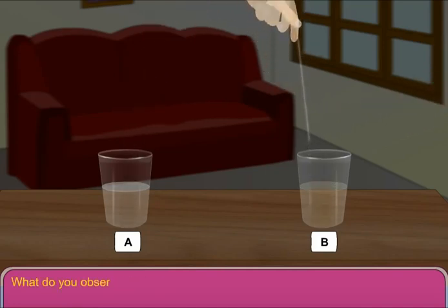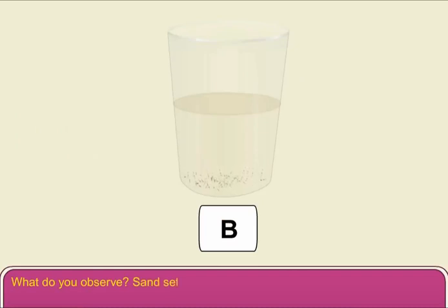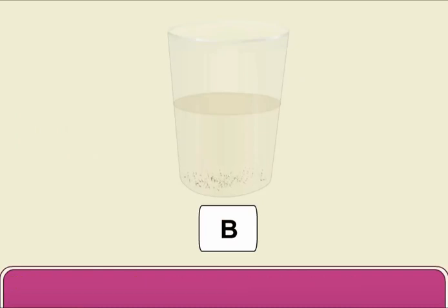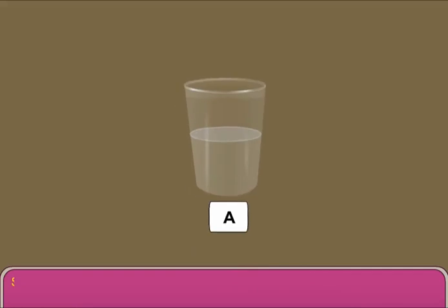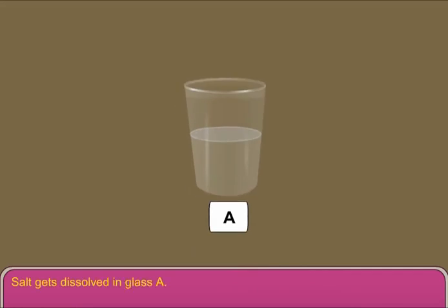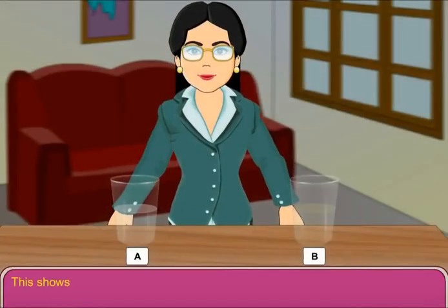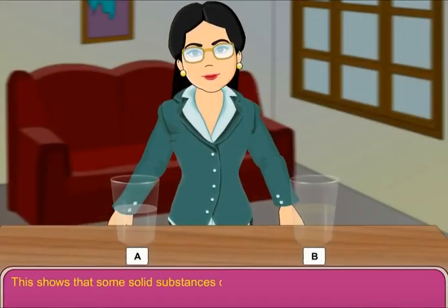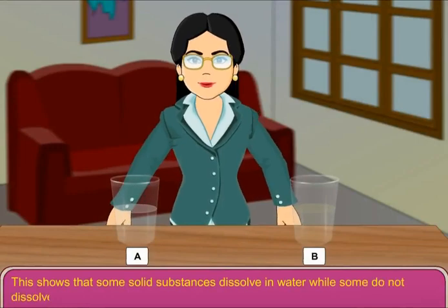What do you observe? Sand settles down at the bottom of glass B. Salt gets dissolved in glass A. This shows that some solid substances dissolve in water while some do not dissolve.